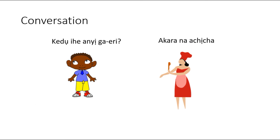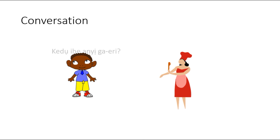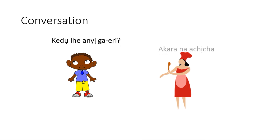Kiri hanyi giri — what are we eating or what will we eat? Akara na chicha — akara and bread. Akara is fried bean balls made from bean paste formed into balls and fried. Akara na chicha.